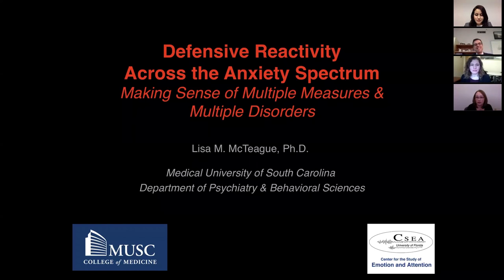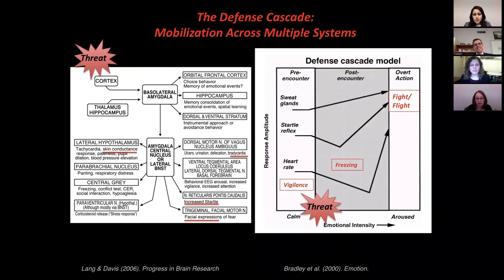Today I'll be talking about defensive reactivity across the anxiety disorder spectrum, taking more of a conceptual descriptive approach as opposed to a statistical one. I'm currently at the Medical University of South Carolina, but this data was collected with Peter Lang, Margaret Bradley, and colleagues at the University of Florida. The defensive system is activated in the context of threat, with neural structures that have outputs to structures mediating reactions in a host of autonomic and somatic physiological systems, prompting a wide array of responses.